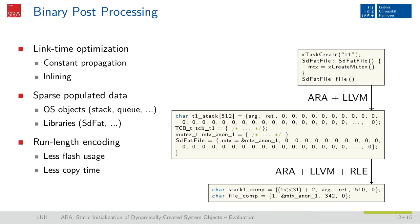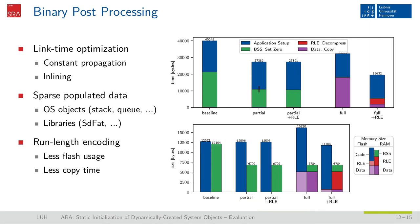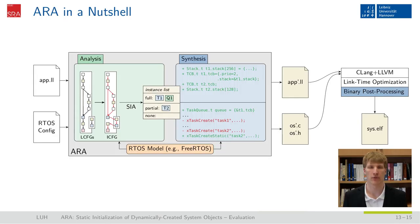Applying this run-length encoding as well, we see that the overall time needed to reach the system setup point lowers down to about 20,000 cycles, which is about half of the originally needed 40,000 cycles. We see the impact of the run-length encoding as the purple section shrinks and is replaced by a much smaller red section of the bar. For memory usage, denoted in the lower diagram, the numbers stay mostly the same or lower a little. With run-length encoding in place, we have the full picture of ARA ready to be applied on our applications.